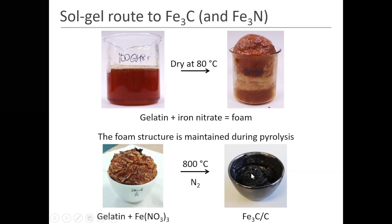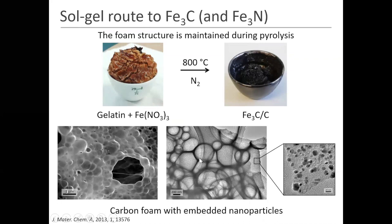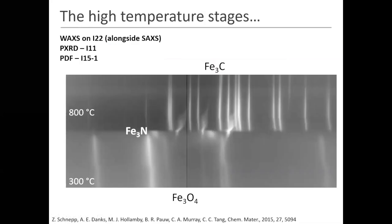That foam structure is maintained during the pyrolysis — you take the foam, heat to 800°C in nitrogen, and the result is the foam contracts slightly but the foam structure is maintained really nicely. From electron microscopy images of the foam, what we've actually got is a carbon foam — the gelatin polymer has decomposed to a carbon foam — with embedded nanoparticles of the iron carbide material. We didn't intend to make this foam, but for applications in catalysis where you want large quantities of fluid to flow over catalytic nanoparticles, a foam structure is quite attractive.